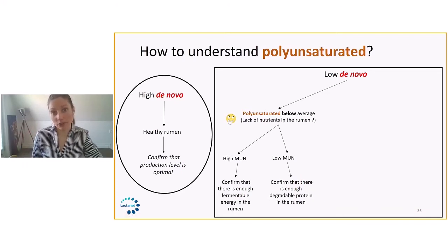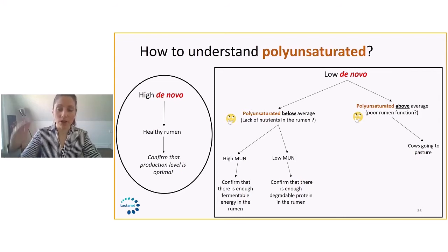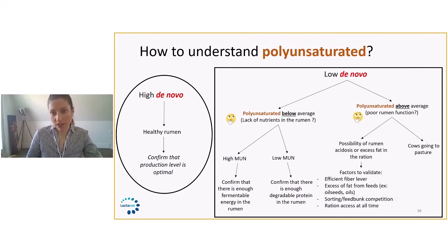On the other hand, when we have low de novo and high polyunsaturated, meaning that they are above average, we suspect that there are still lots of double bonds found in milk fat. We think that the biohydrogenation might not be occurring the way that it should be. It seems like there is poor rumen function going on. If the cows just went on to pasture, they will be eating lots of fresh grass and the polyunsaturated might go up. In this scenario, it's normal. But if you're not in a scenario where cows are going to pasture and polyunsaturated are above average in combination with low de novo level, we think that maybe there's a little bit of rumen acidosis going on or there is an excess of fat in the ration.